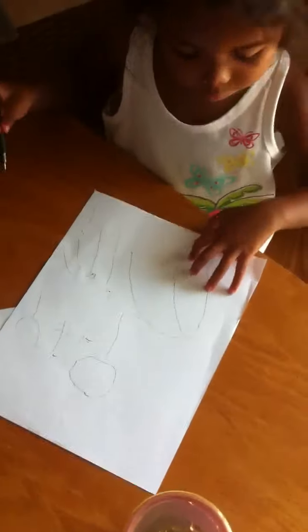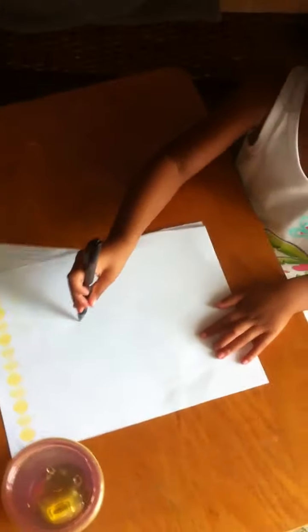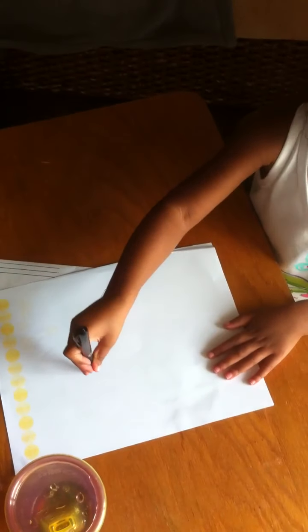Can you draw a person for Mimi and Papa? Why don't you draw a person? Draw a potato head. Circle.